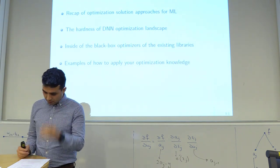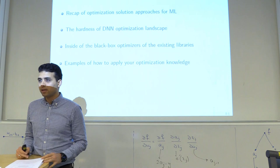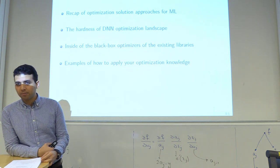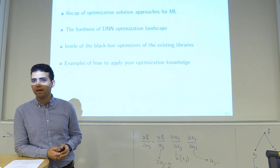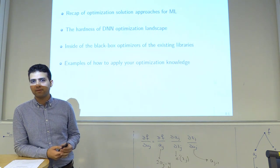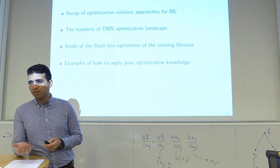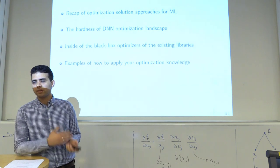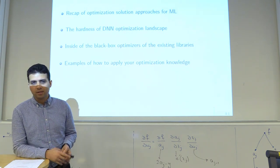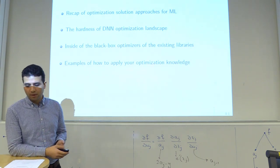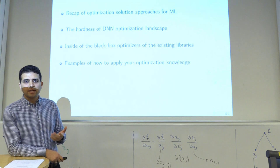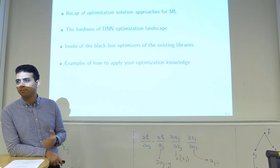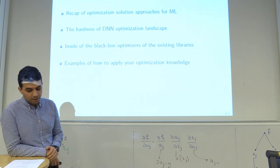We're going to start with a recap of the optimization methods — an extensive recap going from the convex optimization setting to the stochastic setting, non-convex setting, and everything over the network. Then you will see that training of a deep neural network is essentially an application of whatever we have covered.